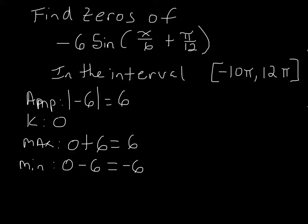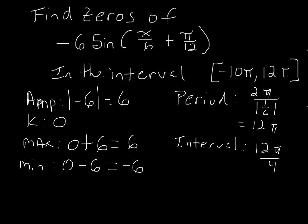Now our period occurs at 2π over the absolute value of the number in front of x. So that's 1 over 6, and that's equal to 12π. So our interval is going to be 12π over 4, or 3π.